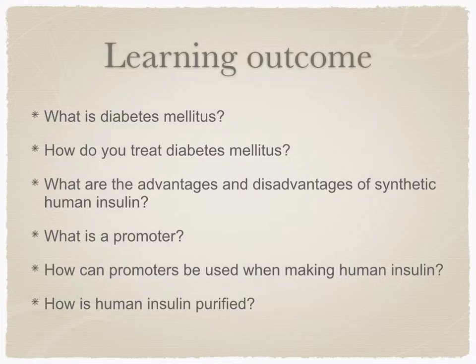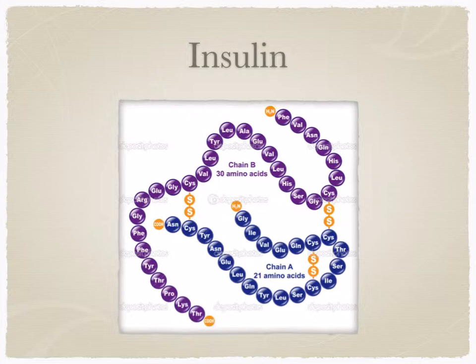Finally, we're going to touch on how to purify human insulin, but we'll go into that in more detail under the topic biotechnology. Insulin has an A chain and a B chain. Some people are unable to control blood glucose levels due to either a lack of insulin or a loss of responsiveness to it. These people suffer from diabetes mellitus.